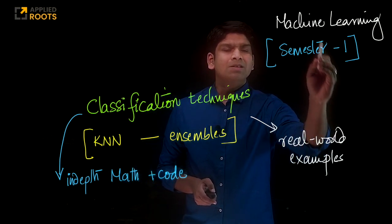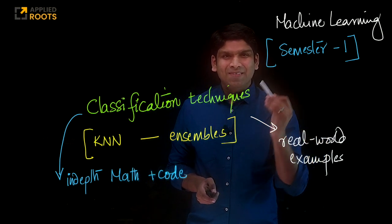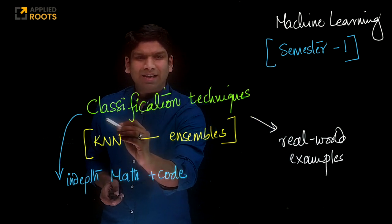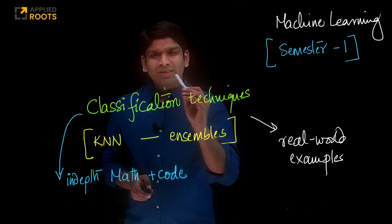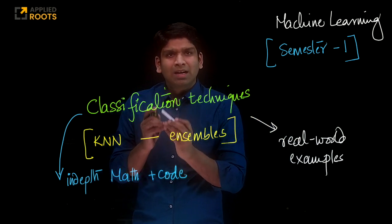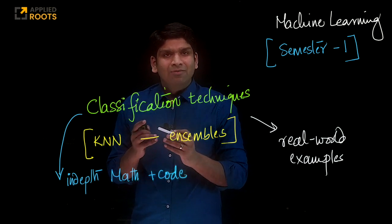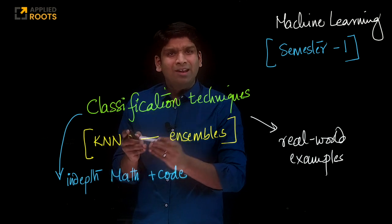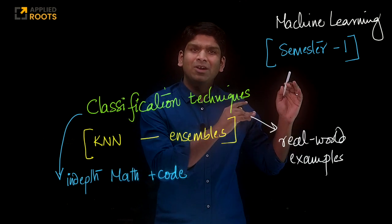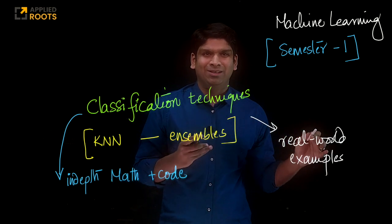Our next course in the first semester is called machine learning. In this course we will first start with classification techniques. Within classification techniques we will start with the simplest of all which is K nearest neighbors, and will graduate all the way up to state-of-the-art ensemble techniques.